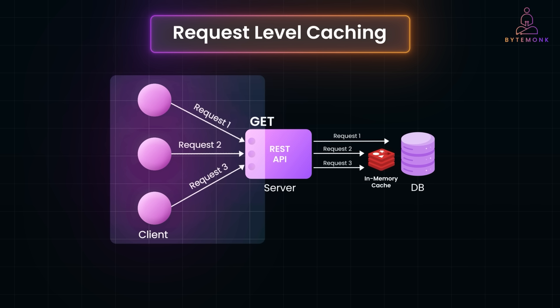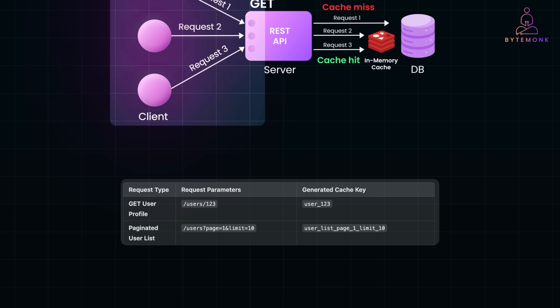Here is the basic workflow: when a client makes a GET request, the server first checks if a cached response exists. If it does, it's a cache hit and the server immediately returns the cached data. If it doesn't, it's a cache miss — the server processes the request, generates the response, and caches it for future use. Request-level caching relies on generating unique cache keys for each combination of request parameters. A cache key is a unique identifier used to store and retrieve cached data, ensuring that responses for different queries don't override each other.